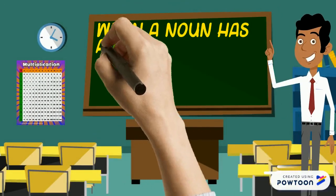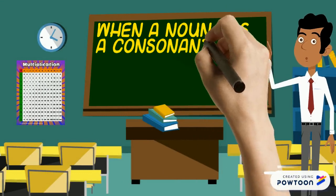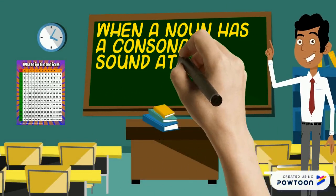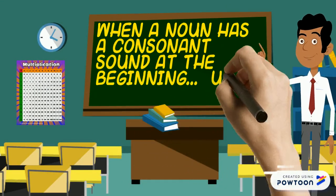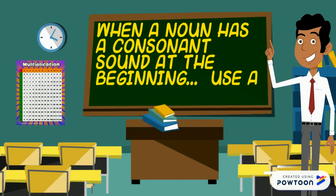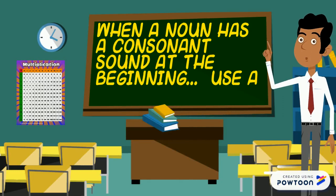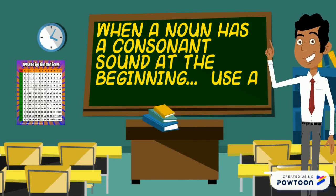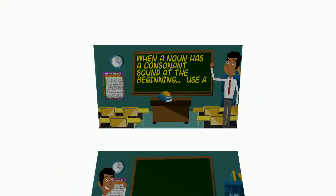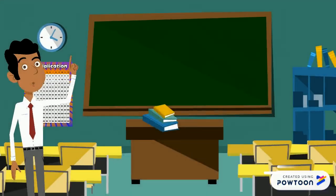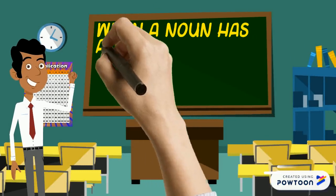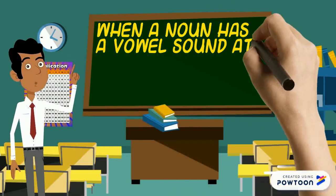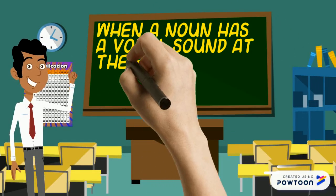When a noun has a consonant sound at the beginning, use a. When a noun has a vowel sound at the beginning, use an.